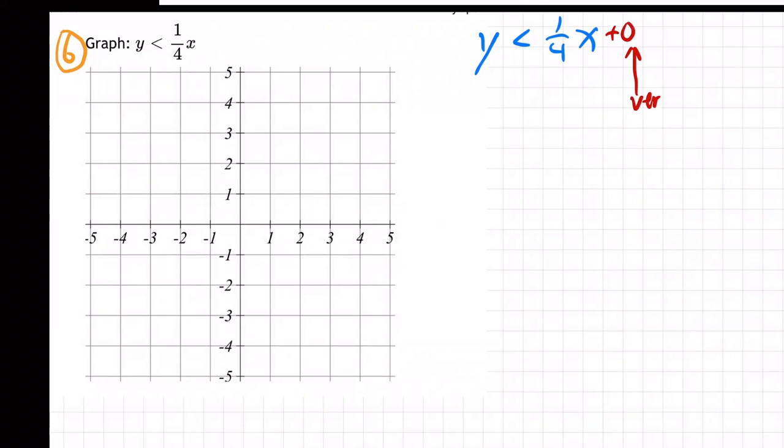That's the vertical Y intercept. So whatever number is off to the right is the vertical Y intercept. So in this case, there's nothing there, so that means it starts at zero. Right there, there's your first dot. That's how you get your first dot.